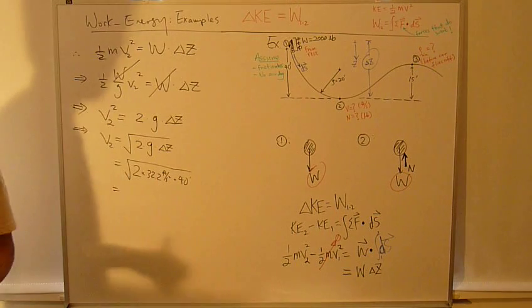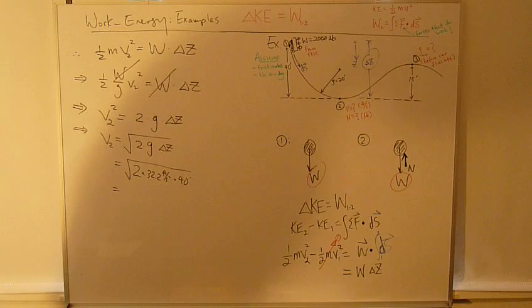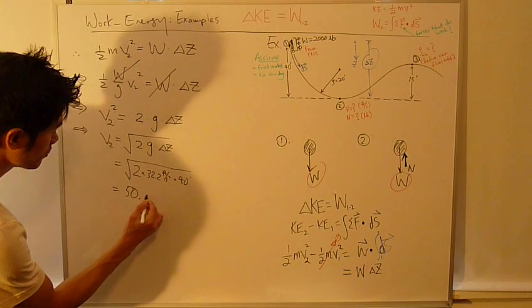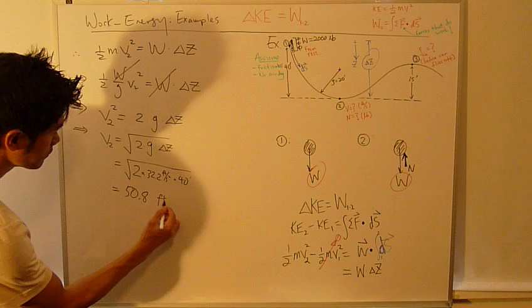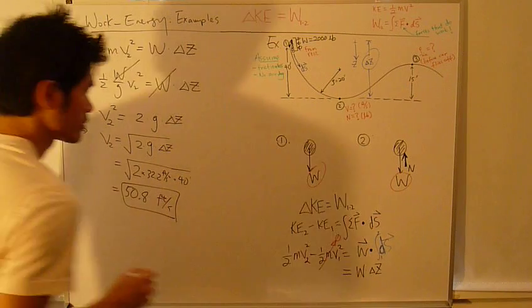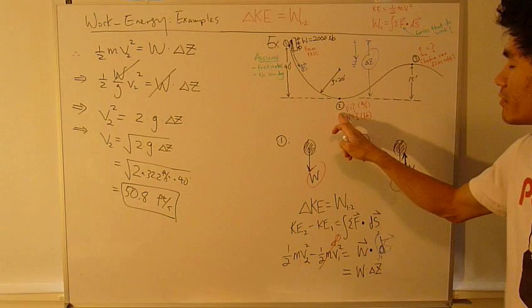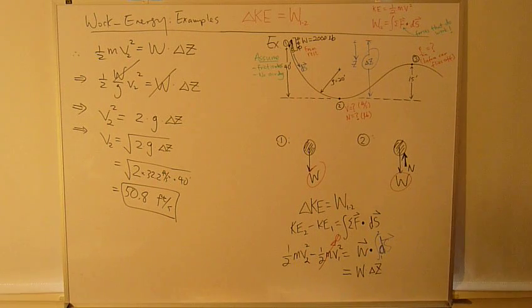So, the crunch number turns out to be 50.8 feet per second. 50.8 feet per second at position 2 is on the track.